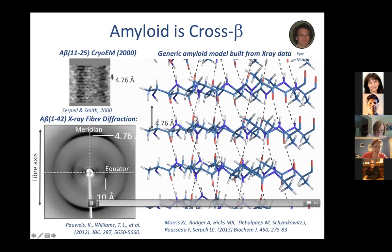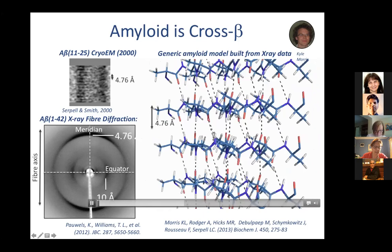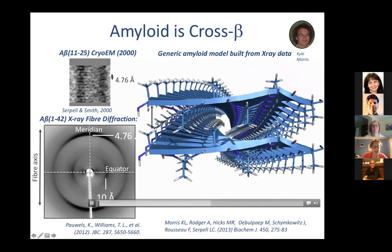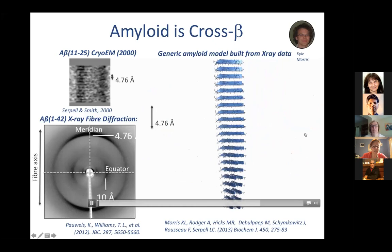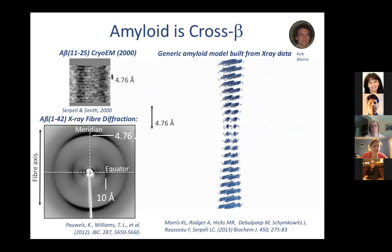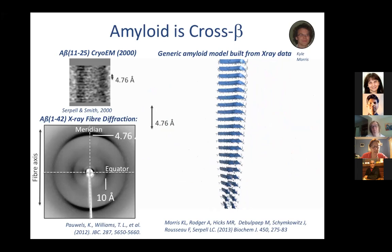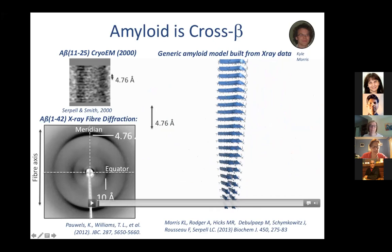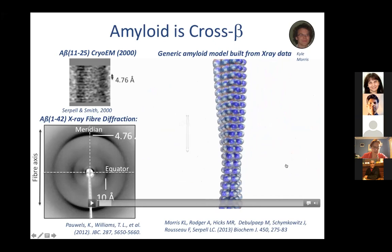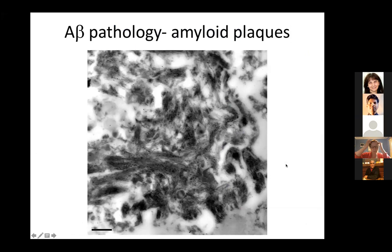This is a generic amyloid model built from X-ray data using a short amyloidogenic peptide. As I show the movie, I'll reiterate what cross-beta means. In blue you can see the beta strands running perpendicular to the fibre axis, and here you see the massive network of hydrogen bonds — that distance was 4.6 Å. Now looking down the fibre axis, you can see interdigitation of the side chains; this distance is around 10 Å but will differ depending on what those side chains are.